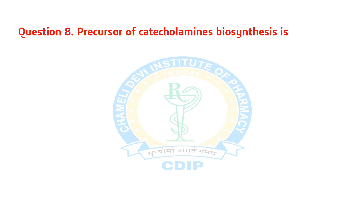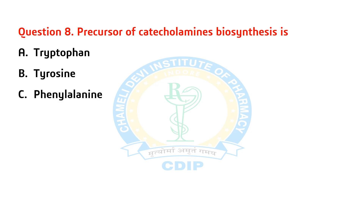Question 8. What is the precursor of catecholamines biosynthesis? A) Tryptophan. B) Tyrosine. C) Phenylalanine. D) Histidine. Answer: B. Tyrosine.